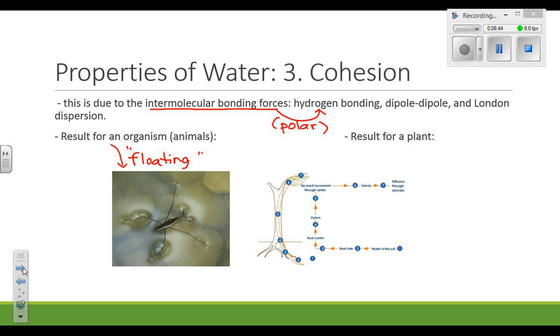The result for a plant, the idea would be water movement. Water moves up in a plant, which is against the force of gravity, and for water to accomplish this, it needs to have a couple of forces working in its favor.